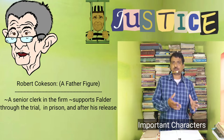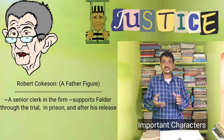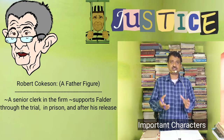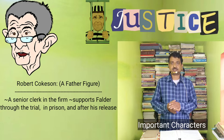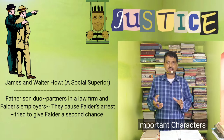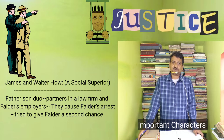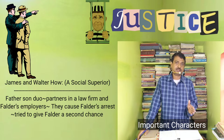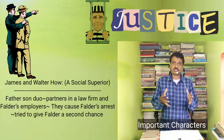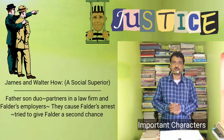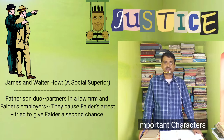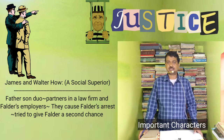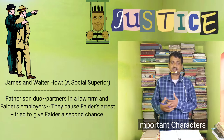Robert Coxon is a senior clerk in the firm who supports Falder through the trial, while he is in prison, and after his release — there is something of a father figure in Coxon. James and Walter Howe are the partners in the law firm and Falder's employers. They cause Falder's arrest, but after his release from prison they are willing to discuss taking him back into their company, though somehow it is never actualized and Falder meets a tragic end.